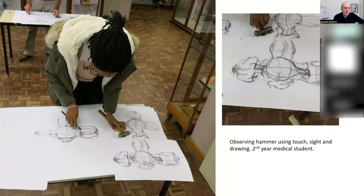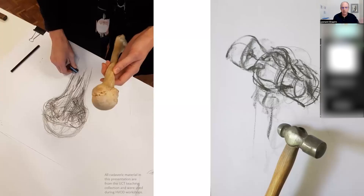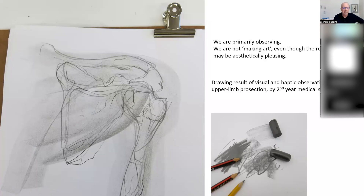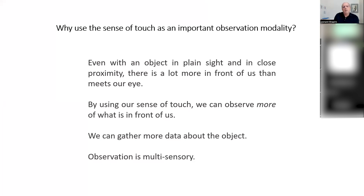We're not making art — we are trying to observe more of what is in front of us. I first start with a non-anatomical object, in this case a hammer, and take the students through various stages of learning. What you can see here is that the student is feeling with one hand while drawing with the other. We also use a cut piece of chalk so students can grasp and draw with both the broad side and the end of it.